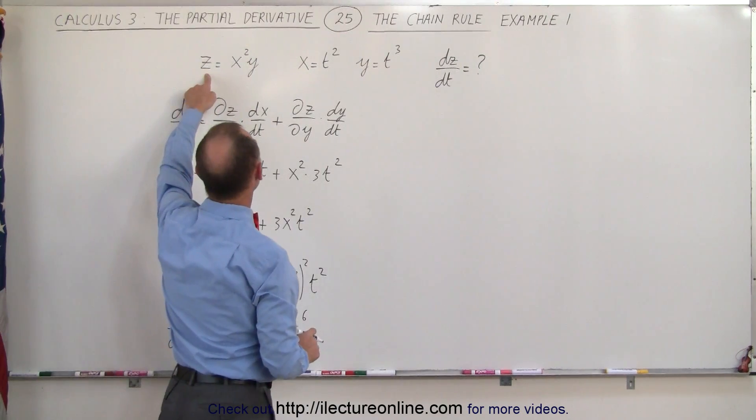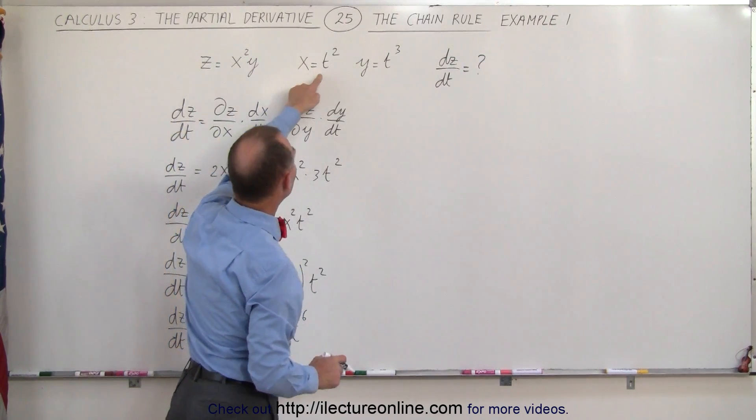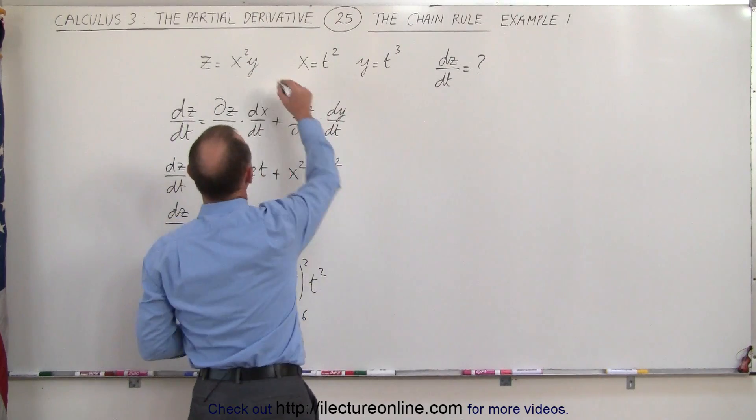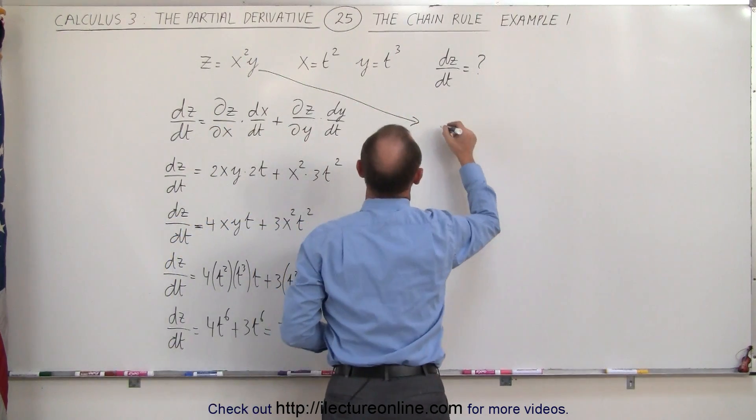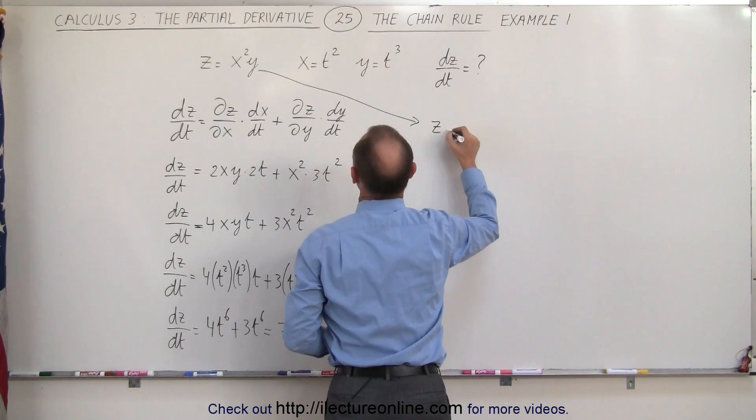Let's go ahead and plug in for x squared what x squared is equal to and for y what y is equal to. So here we're going to rewrite the function, z is now going to become a function of t.